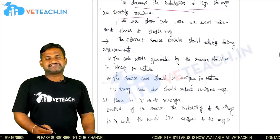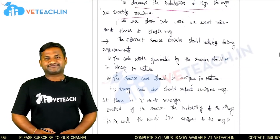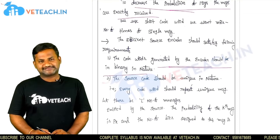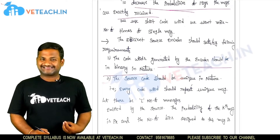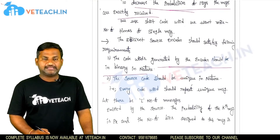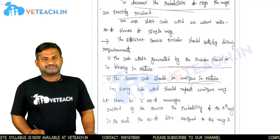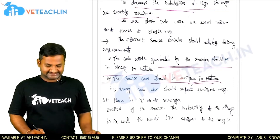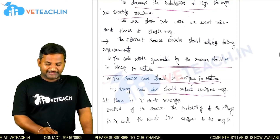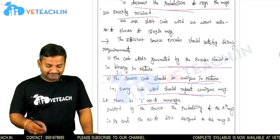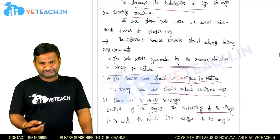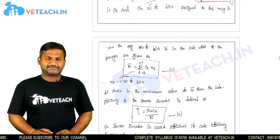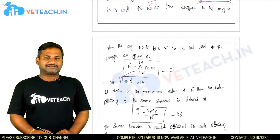What are the basic requirements in source coding? First, the code word generated by the encoder should be binary in nature — it should be either 0 or 1. Second, the source code should be unique in nature: for one message, there should be only one code. The same code cannot be repeated for more than one message. Every code word should represent a unique message. Let there be L number of messages; the source coding can be related as: n-bar equals summation from k=0 to L-1 of pk times nk, where pk is the probability of the kth message and nk is the number of bits in the kth code word.